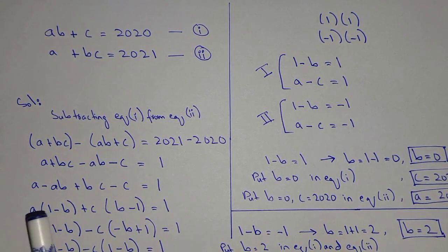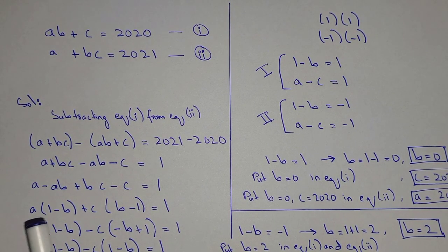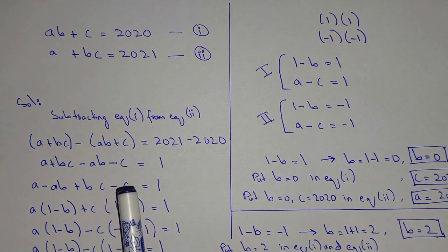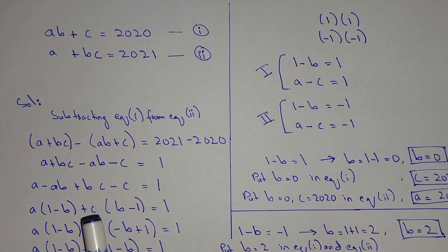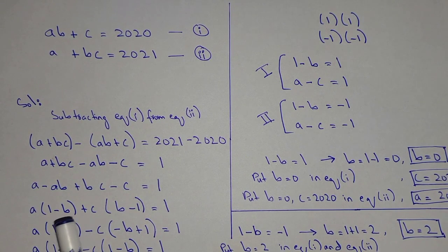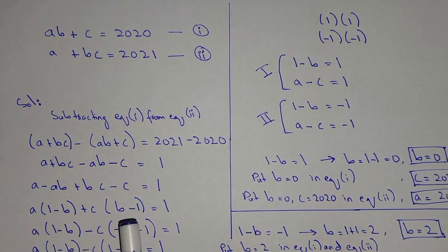Taking A common from the first two terms: A outside and 1 minus B inside. Then taking C common from the last two terms: plus C outside and B minus 1 inside, equal to 1. We want to keep the 1 minus B bracket the same in both terms.